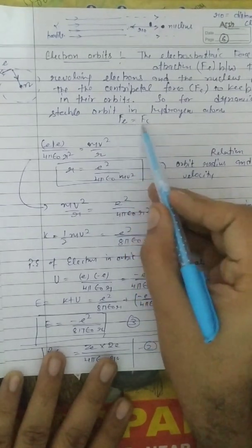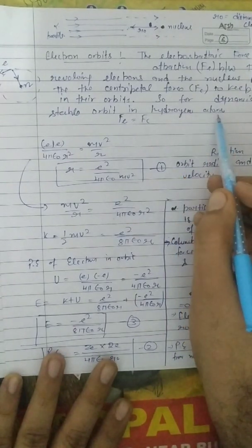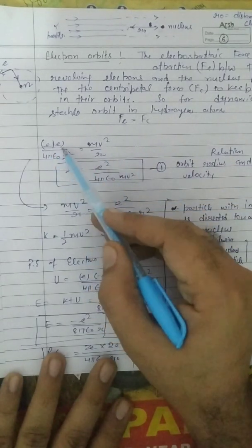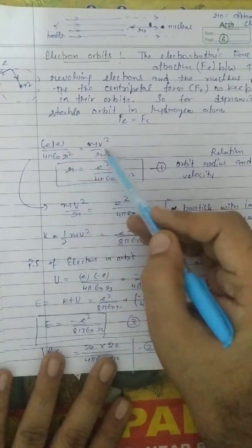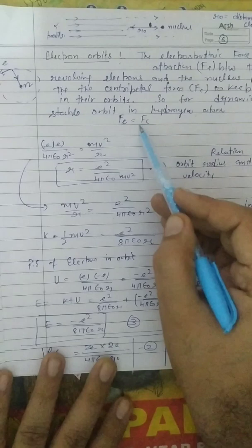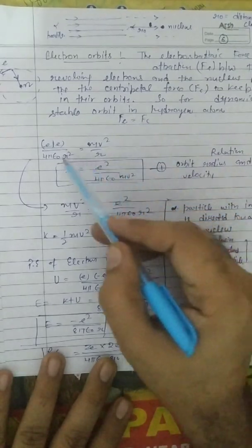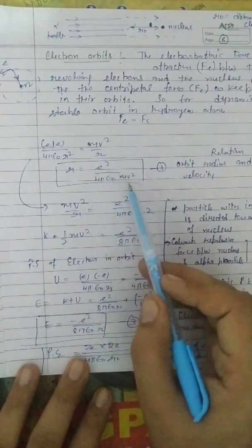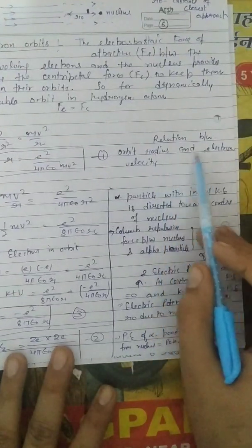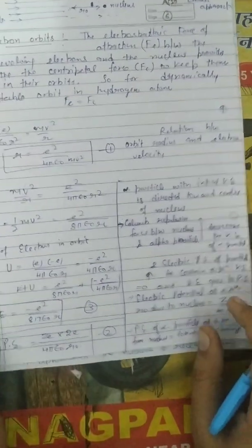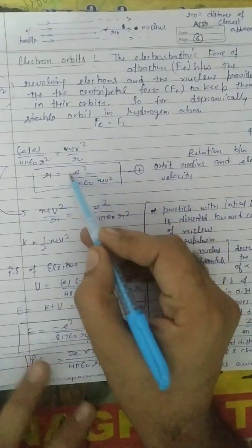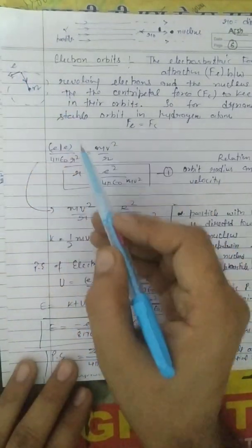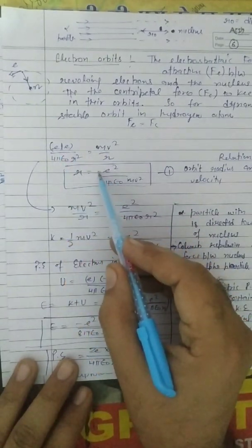So we can say that both forces are equal, and we are taking hydrogen as our example. Setting the electrostatic force of attraction equal to the centripetal force, we can derive the velocity of the electron. The value comes out to be negative because the nucleus is positive and the electron is negative — positive times negative gives a minus sign.